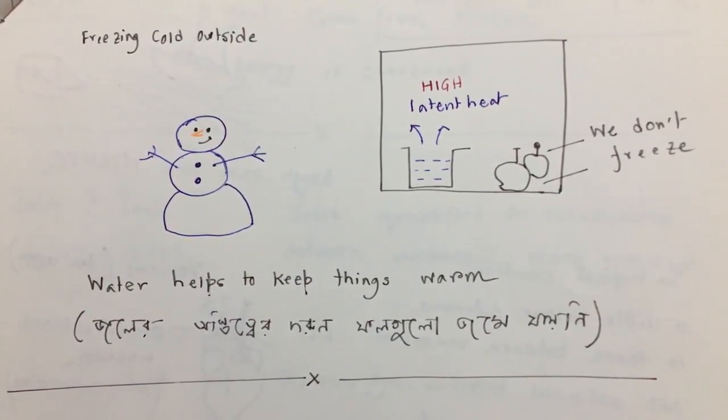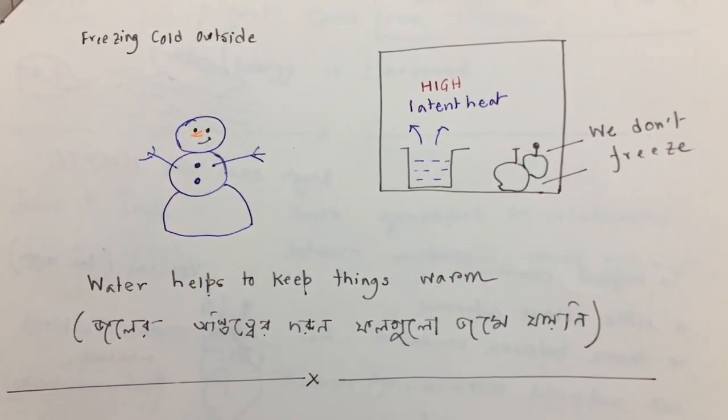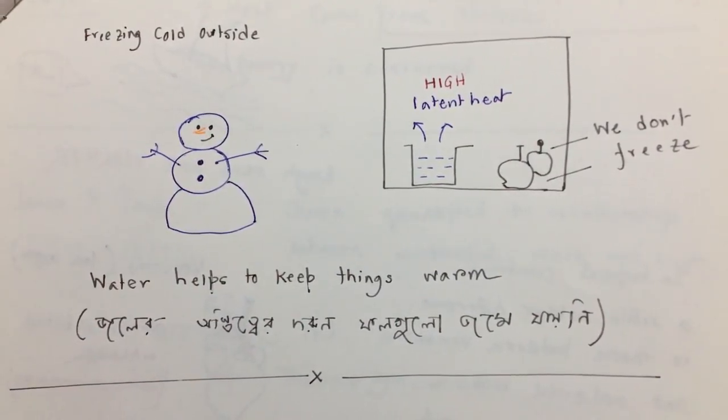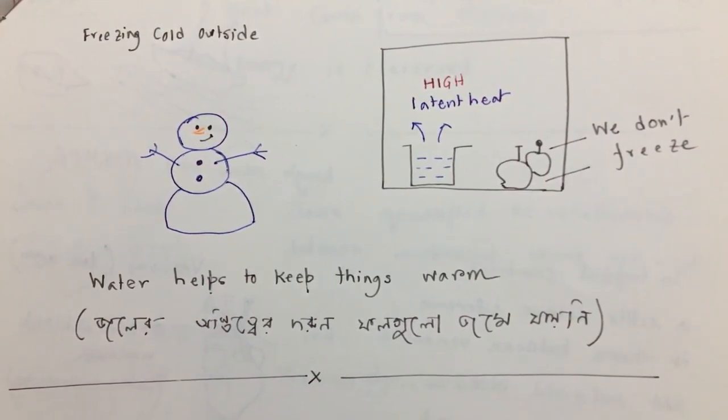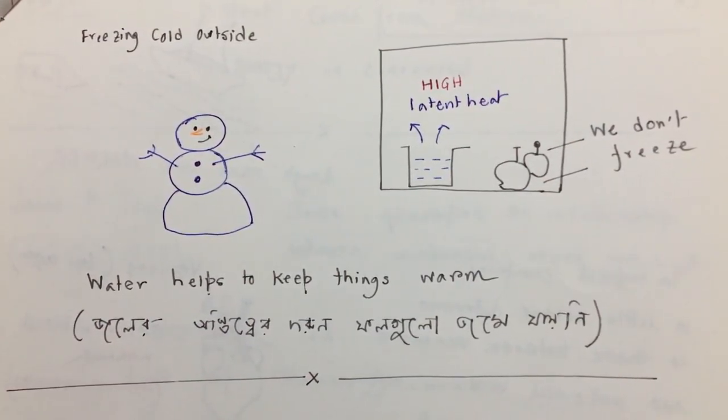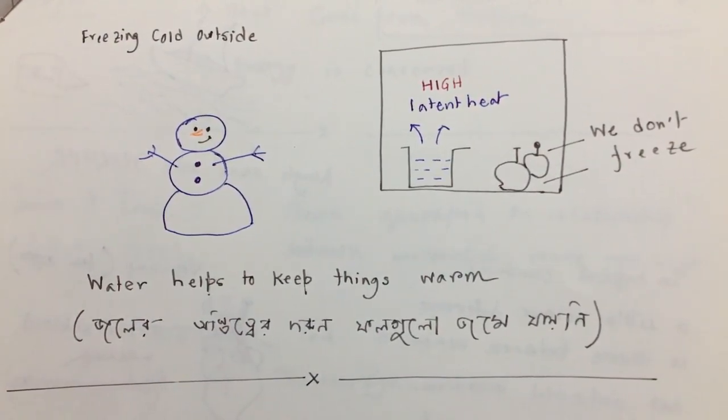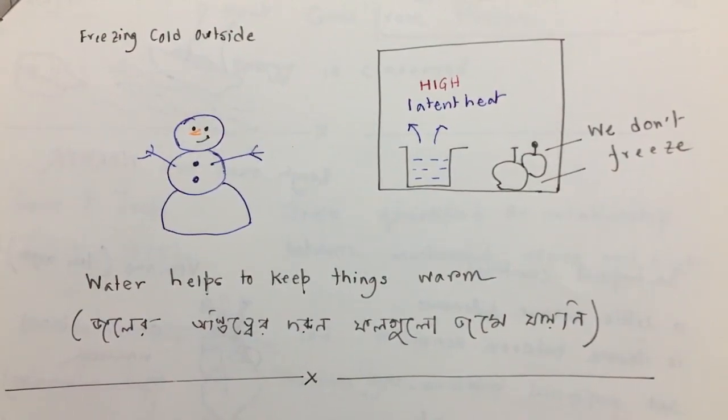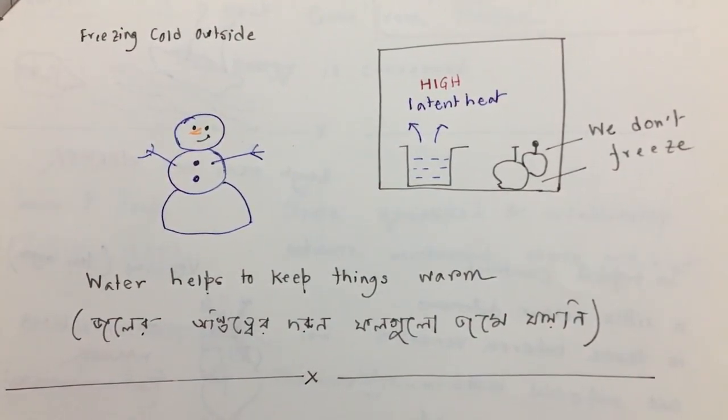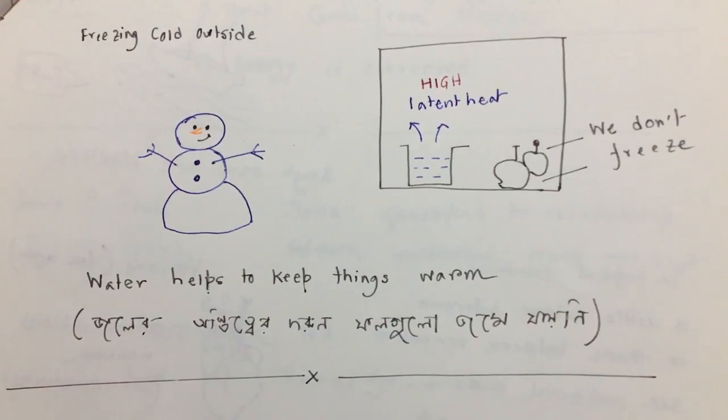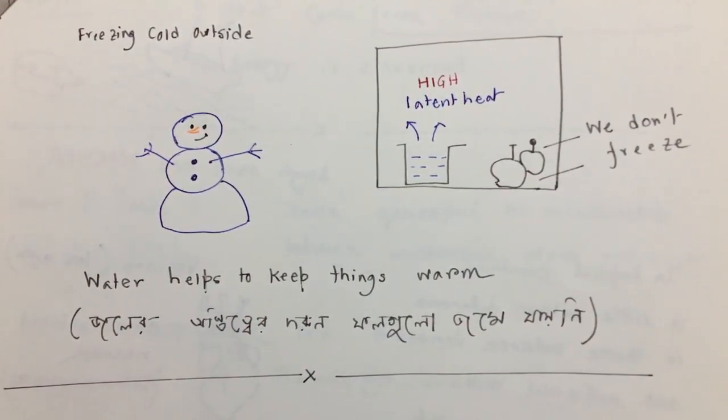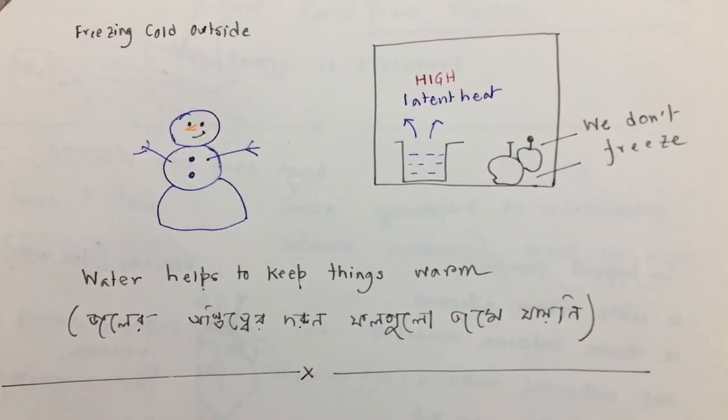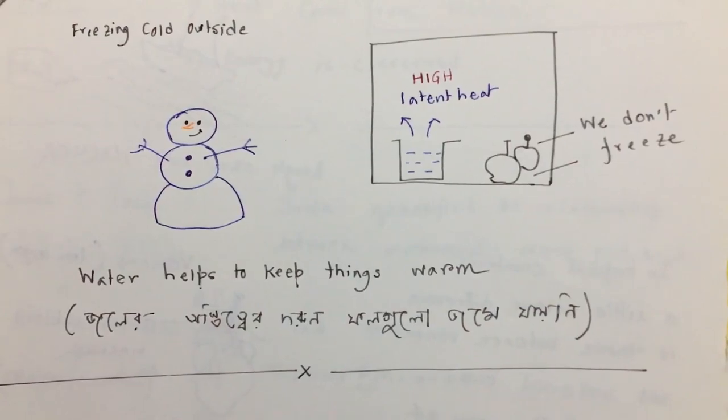Water is also having a very high latent heat. Because of the high latent heat, the things which contain water—fruits, vegetables, we ourselves, animals—everybody of us is containing some water. Our body is almost 70% water. And because of the high latent heat of the water, we do not freeze. Our blood does not freeze, our cells do not freeze. They function properly.